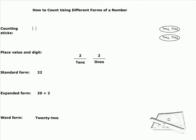21, 22, 23, 24, 25, 26, 27, 28, 29, 30, or three groups of 10.